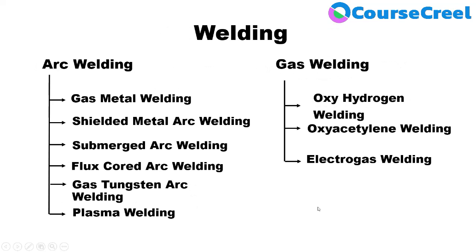Most welding operations are performed using two main types of processes: arc welding and gas welding. Most manufacturers use these two types to join work pieces and construct products.